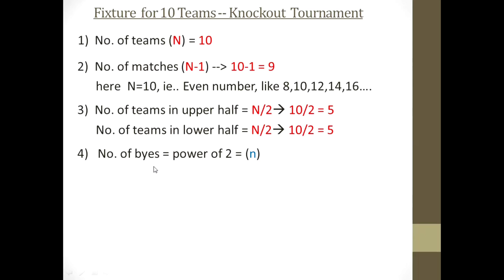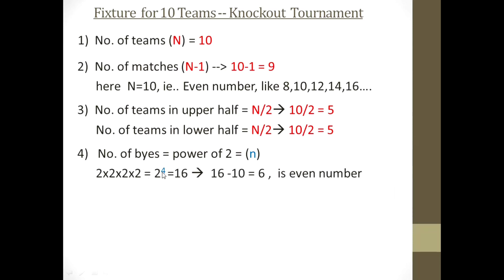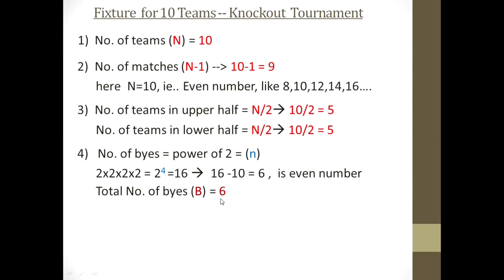The next point is how to calculate byes. The calculation is done by power of 2 (represented as small n). The power of 2 should be greater than the number of teams. So 2 to the power 4 gives 16, which is greater than 10. If it were 2 to the power 3, that gives 8, which is smaller than 10, so we can't use that. Therefore 16 is the correct number, and the number of byes (b) = 16 minus 10 = 6.